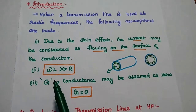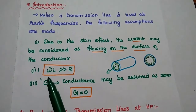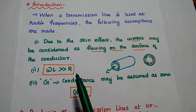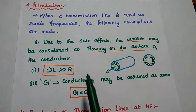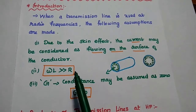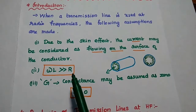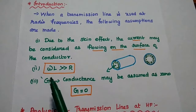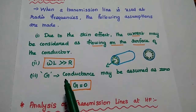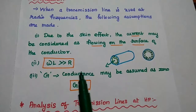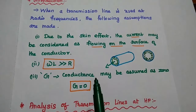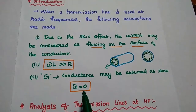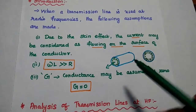The next assumption is very important. Here, the omega L value is far greater than R — the resistance is assumed to be very small when compared with the inductance value. And the third assumption is that the conductance may be assumed as 0, so G is equal to 0.